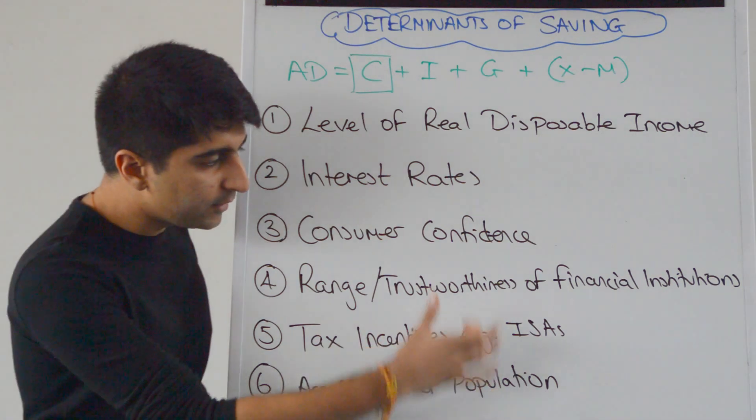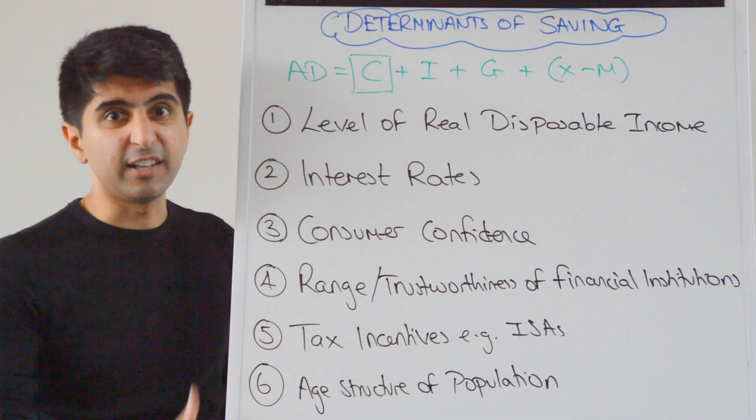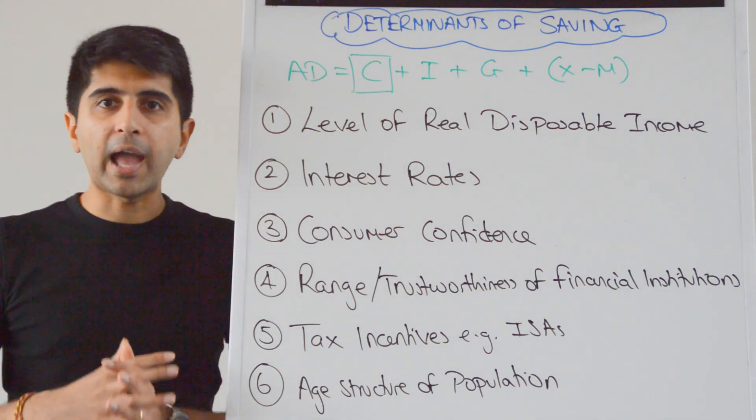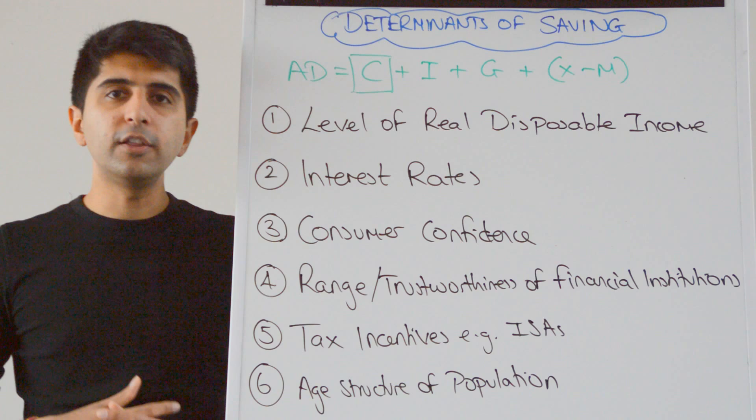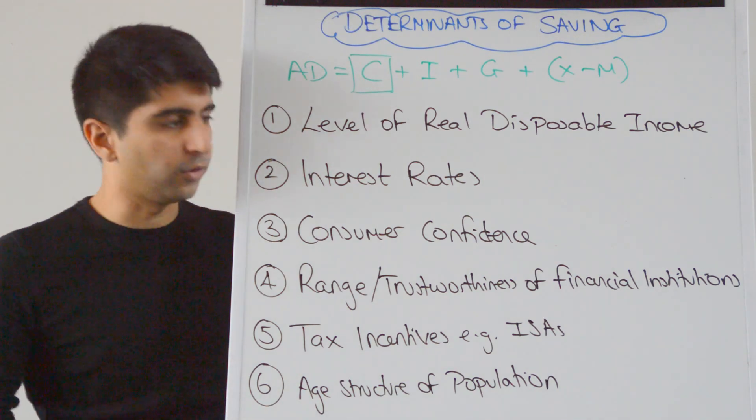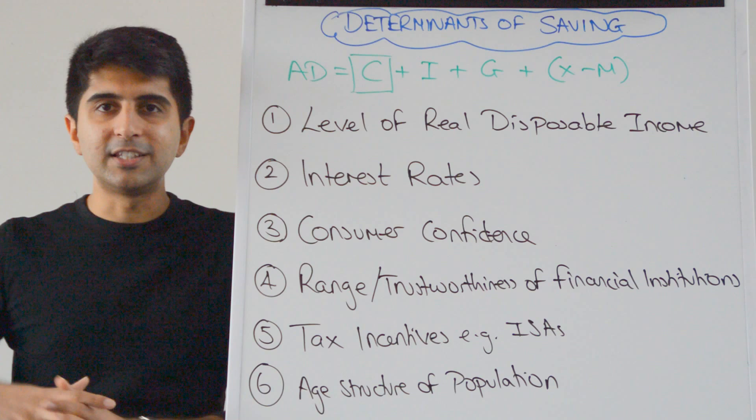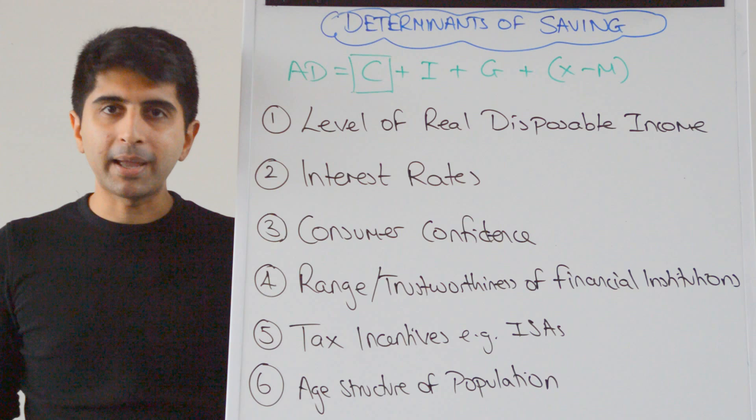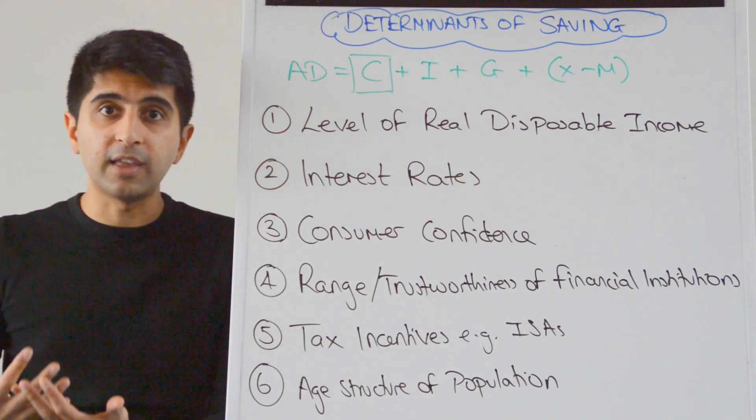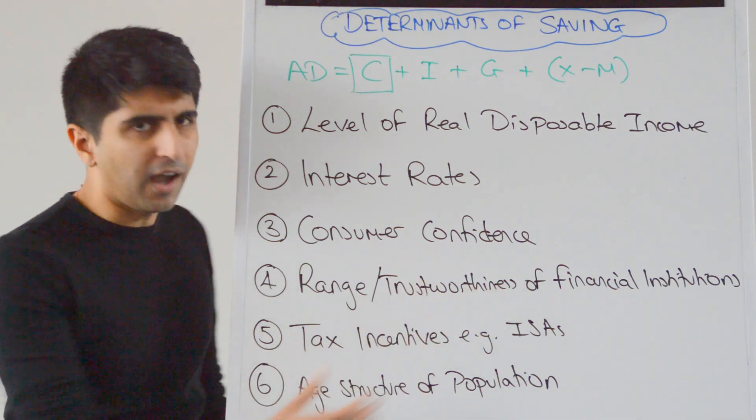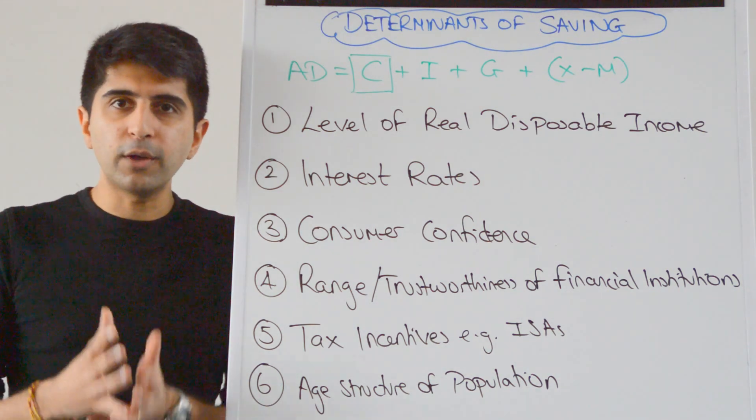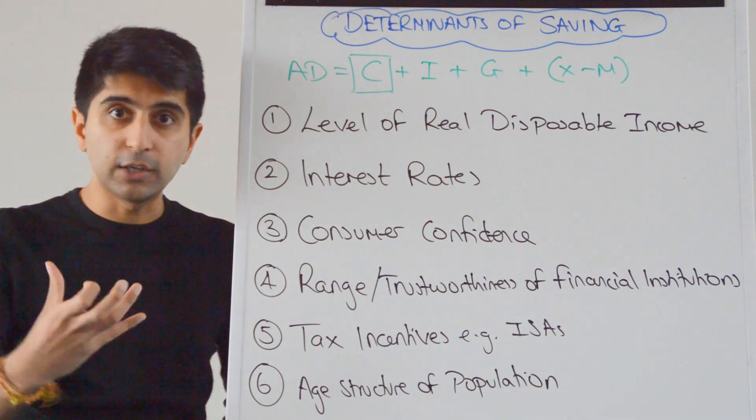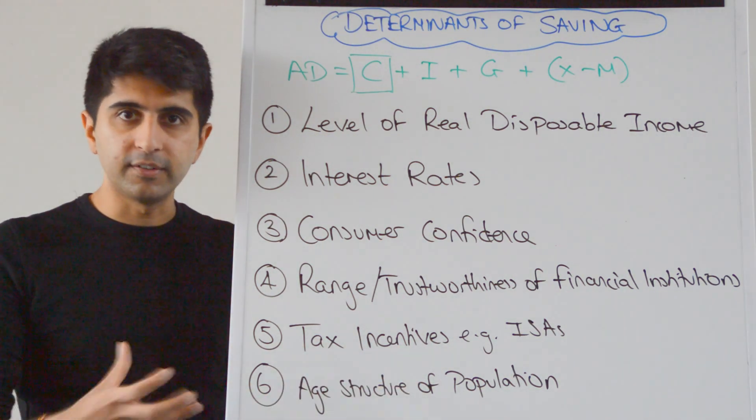Tax incentives like ISAs. So the government policies basically to encourage more saving. And ISA is an individual saving account where you can have savings and earn returns on savings which are tax-free up to a certain threshold. So basically this is a way to save money to protect yourself from paying income tax or capital gains taxes on the savings that you put in bank accounts. So incentives like this can encourage more saving, especially as now the ISA tax allowance is around £15,500 right now. It's a very high tax allowance on savings. That very much encourages savings and therefore can increase the level of saving in the economy the more that you have policies that encourage it.